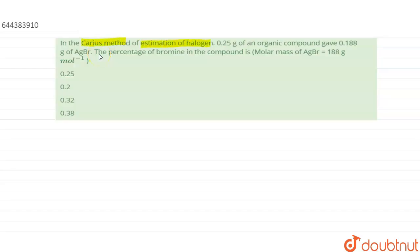In carious method of estimation of halogen, 0.25 gram of organic compound gave 0.188 gram of AgBr. We have to find out the percentage of bromine in the organic compound. Molar mass of AgBr is given as 188 gram per mole.